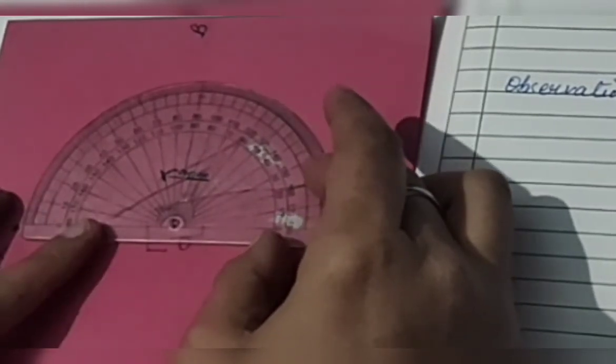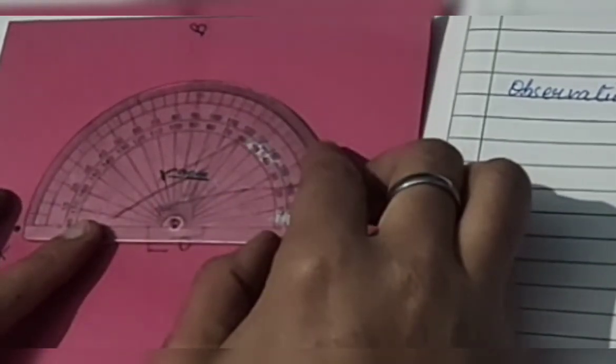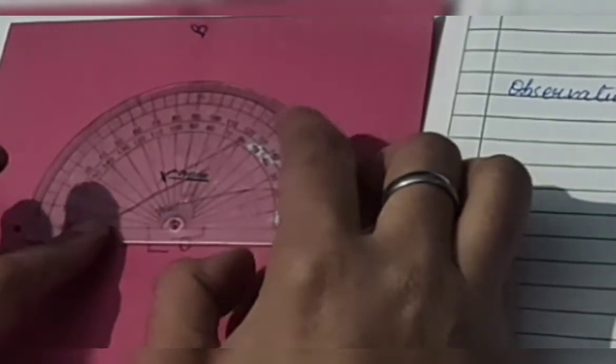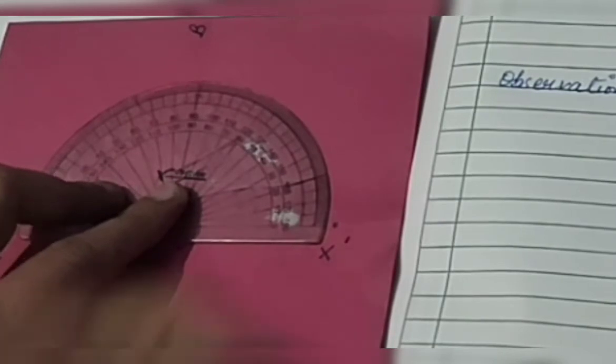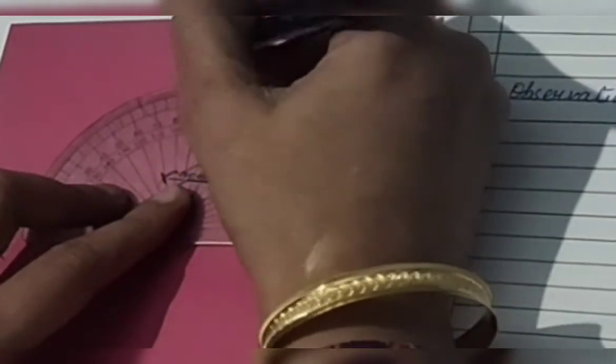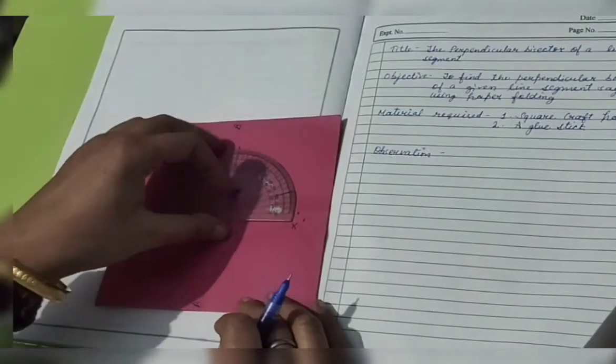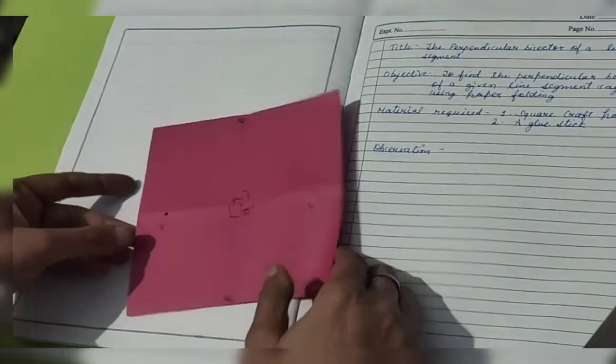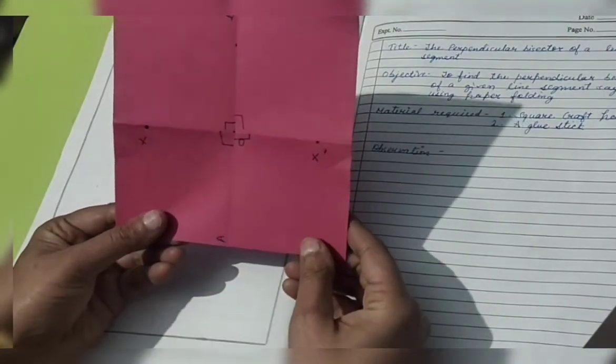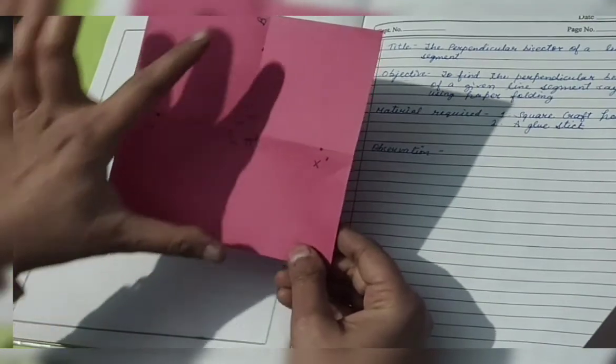And with this dot, and just putting this on the line segment XX dash. Now you can see clearly that this is the crease which is on the 90 degree. So it means these all angles are of 90 degree. So what is XX dash? It becomes a perpendicular bisector of given line AB.